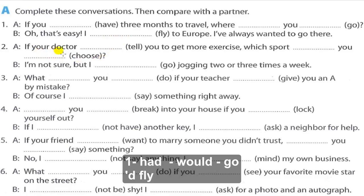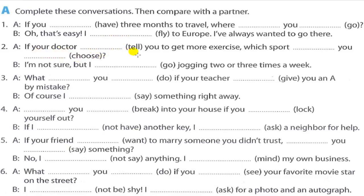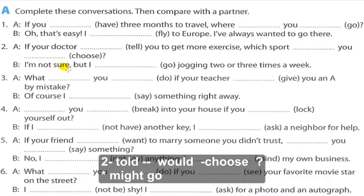2. 'If your doctor told you to get more exercise, which sport would you choose?' — 'I'm not sure, but I might go jogging two or three times a week.' If you're not sure, use 'might.'